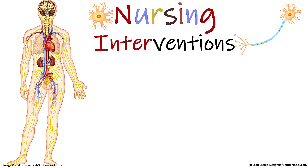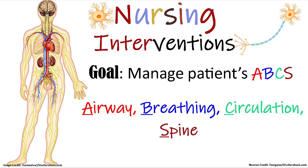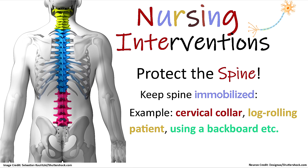Now let's talk about nursing interventions and treatments for a patient in neurogenic shock. The goal is to manage the patient's ABCs — airway, breathing, circulation, and spine. A big priority is protecting the patient's spine, since a cervical or upper thoracic injury above T6 is the main cause. We want to keep the spine immobilized to avoid further damage. This means having the patient in a cervical collar and log rolling the patient during transport or using a backboard.